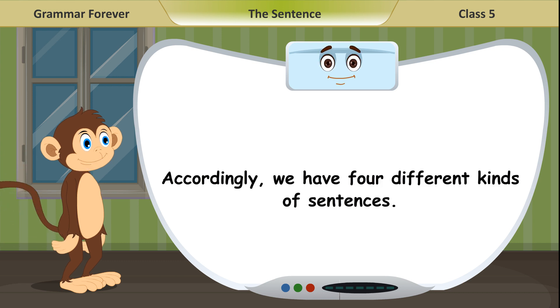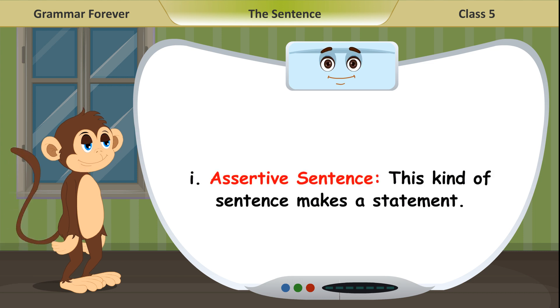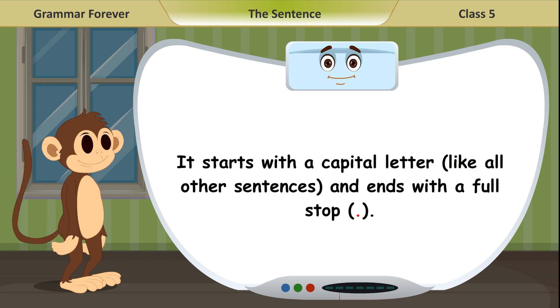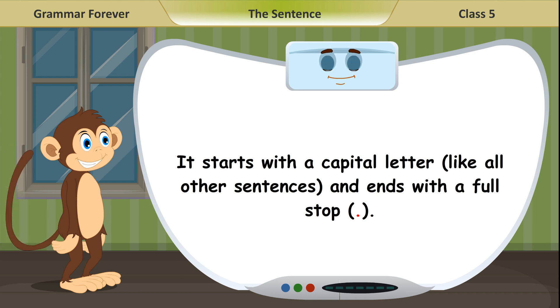Accordingly, we have four different kinds of sentences. First, assertive sentence. This kind of sentence makes a statement. It can be positive or negative. It starts with a capital letter like all other sentences and ends with a full stop.